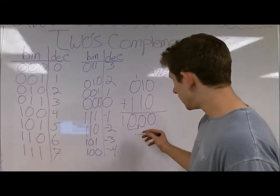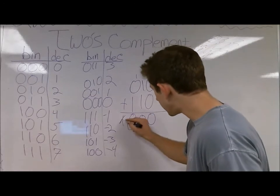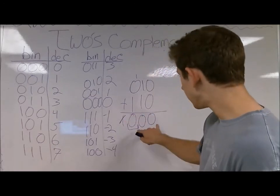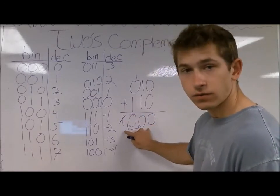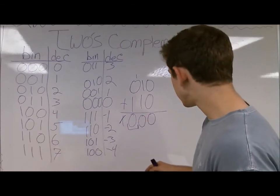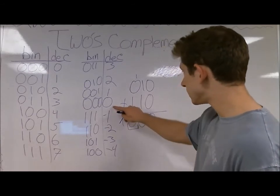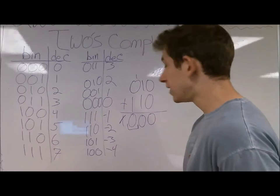This is our leftmost significant digit. This value gets dropped off. We only have 3 bits, so this fourth one doesn't matter. We cross it out, and we get 3 zeros, which is indeed 0. But there is a problem.